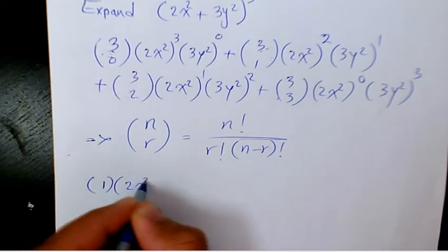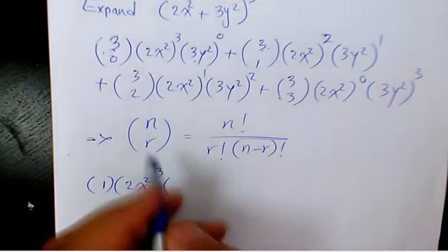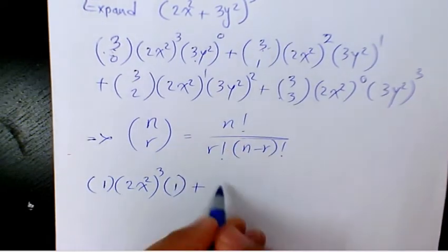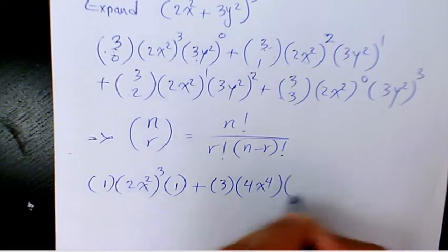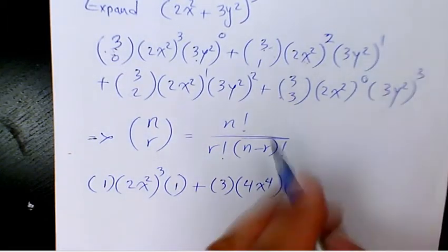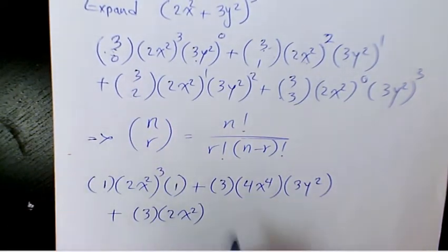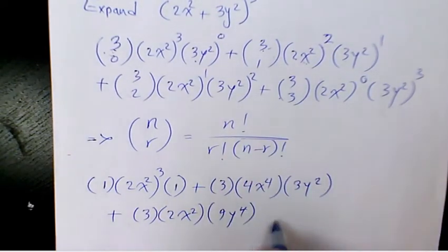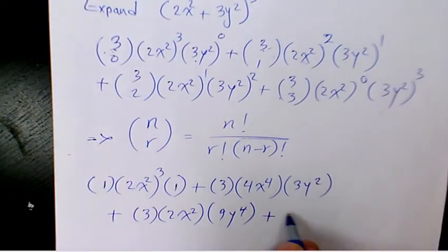So that's going to be: 1 times (2x²)³ — and (3y²)⁰ is 1. Then you have 3 times (2x²)², which is 4x⁴, times (3y²)¹, which is 3y². Then 3 choose 2 is 3, times (2x²)¹, times (3y²)², which is 9y⁴. Then 1 times (2x²)⁰ is 1, times (3y²)³, which is 27y⁶.